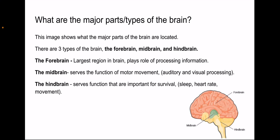There are three types of the brain, the forebrain, the midbrain, and the hindbrain. The forebrain being the largest region in the brain playing a role of processing information. The midbrain serves the function of motor movement, such as auditory and visual processing. The hindbrain serves functions that are important for survival such as sleep, heart rate, and movement.